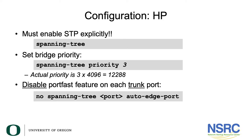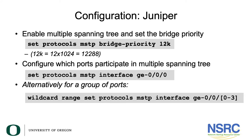For Juniper, you must enable multiple spanning tree with 'set protocols mstp', then set the bridge priority — in this example to 12k. The configuration allows you to just put a 'k', which represents 1024. You then configure which ports will participate in MSTP by saying 'set protocols mstp interface' followed by the interface name. If you have a long list of ports, you can use the wildcard command, which allows you to set multiple ports at once using 'wildcard range', creating 'set protocols mstp interface' commands for interfaces 0 up to 3.